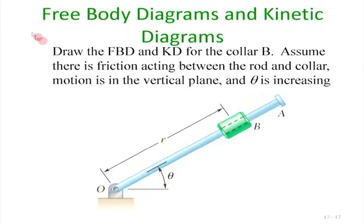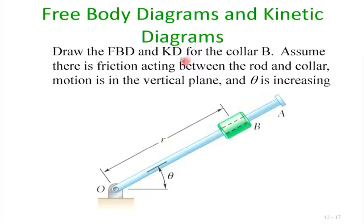Now let us work on a simple problem to draw the free body diagram and kinetic diagram. This problem is from Beer & Johnston 10th edition — I cannot recommend that book highly enough, especially for dynamics: excellent problems, excellent concepts. We have a rigid body OA, rotating counterclockwise at angle θ, with θ̇ and θ̈ given.